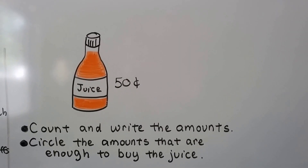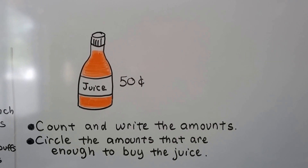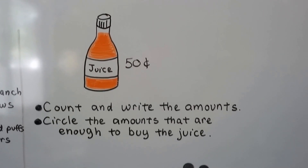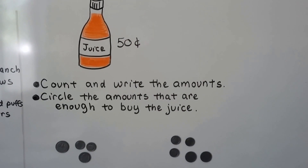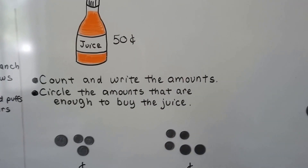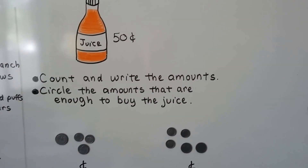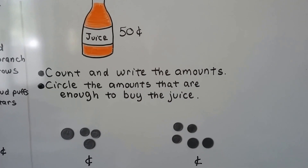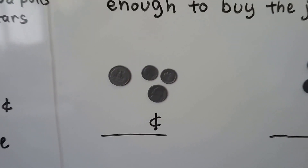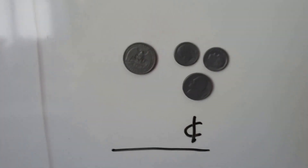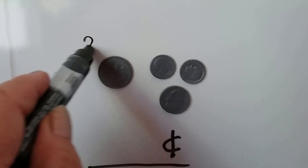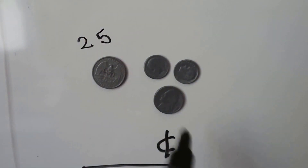Here we have a bottle of juice and it costs 50 cents. We need to count these coins, write the amounts, and then circle the amounts that are enough to buy that bottle of juice. We need 50 cents. Let's see how much this first one is — we have a quarter, that's 25 cents.